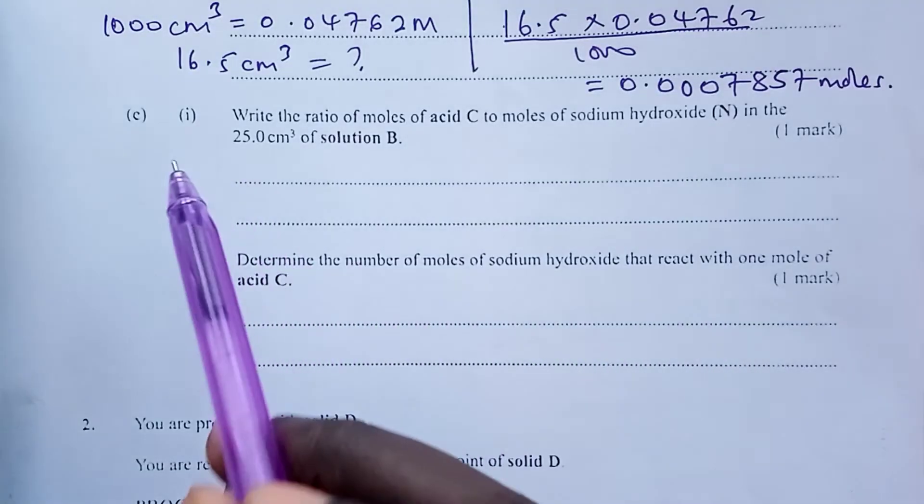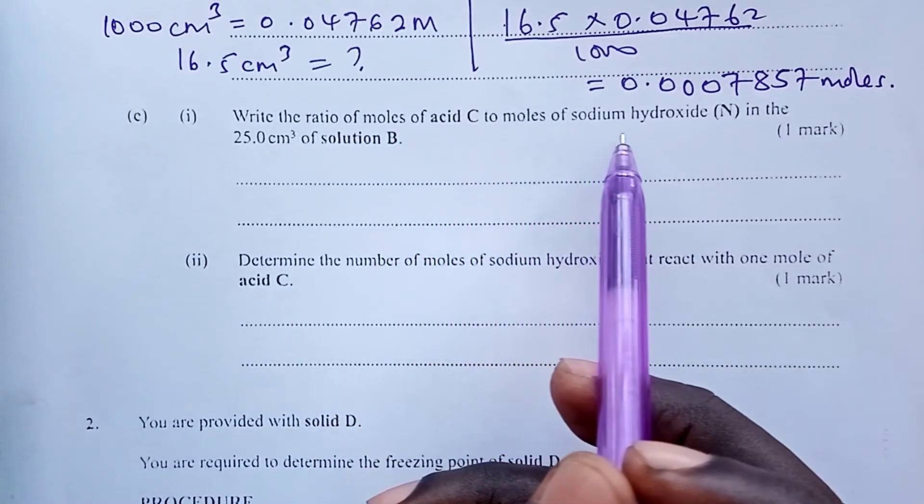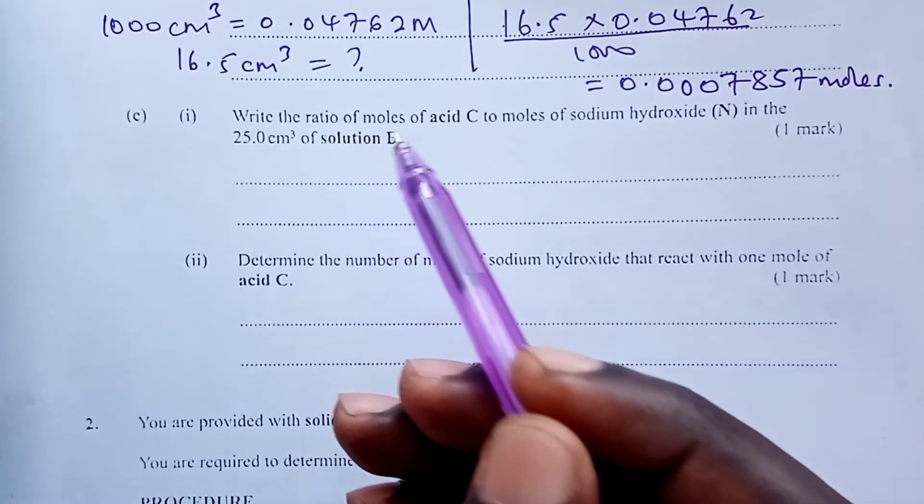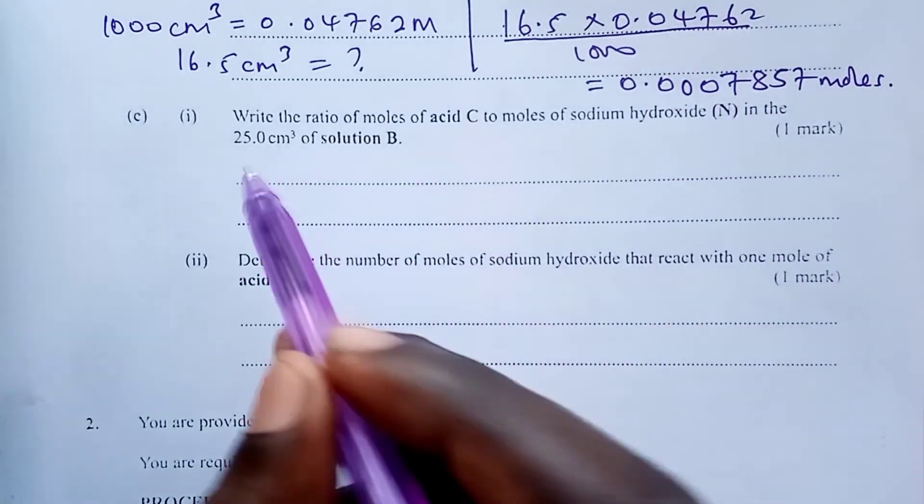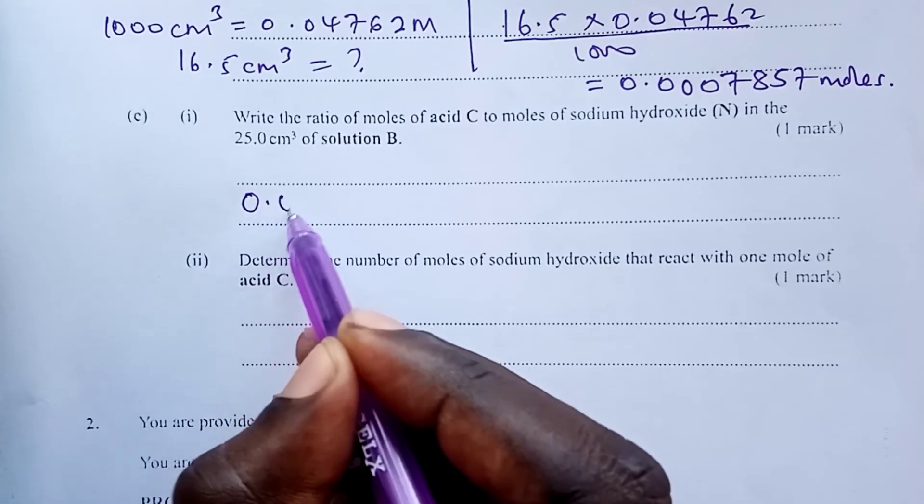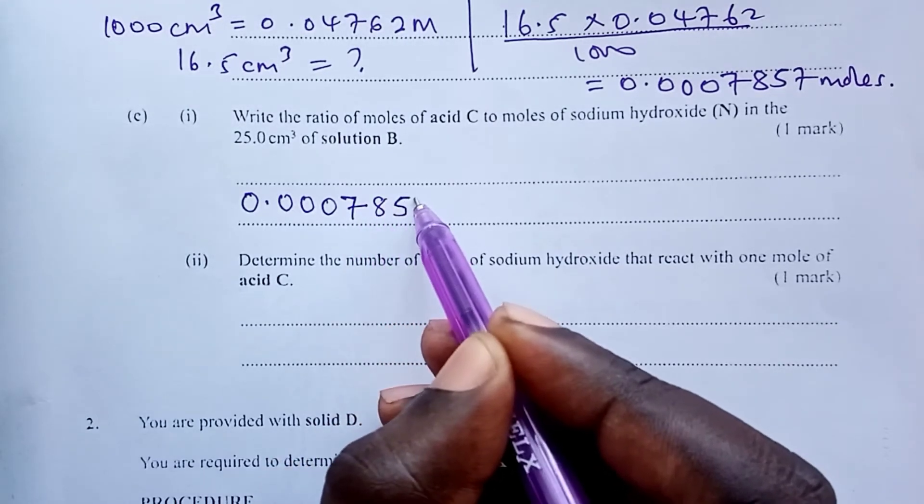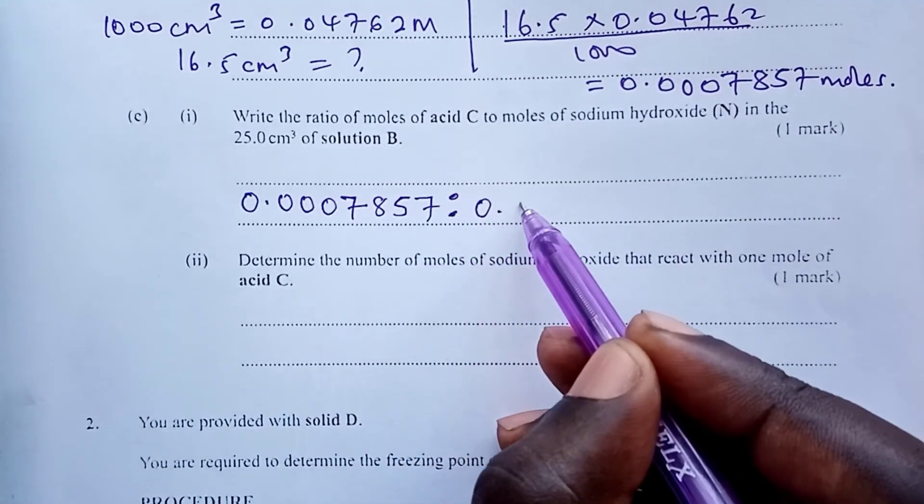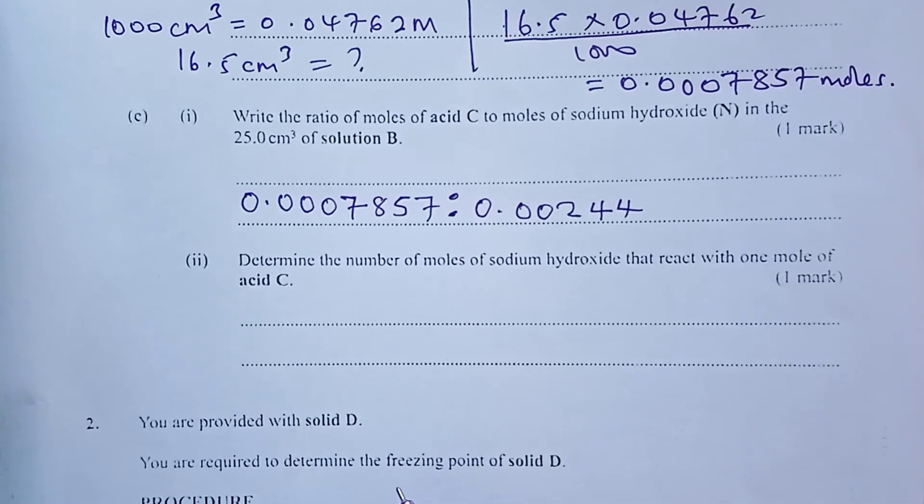So to part C, Roman 1, write the ratio of moles of acid C to moles of sodium hydroxide in 25 cubic centimeter of solution B. Now, this is a very simple question. Moles of C, we have just calculated up here. So the answer is that you simply write moles of C, which is 0.0007857 to moles of sodium hydroxide, which we calculated earlier to be 0.00244. So you leave this as a ratio, and you get the answer to that question.